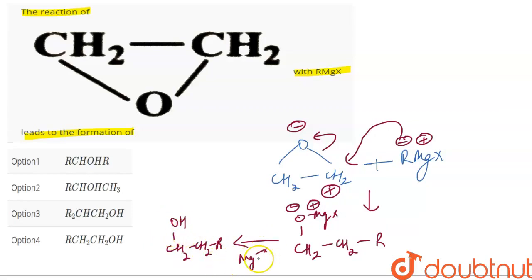And what is it? MgX, OH. So what is the answer? R, CH2, CH2OH. That is option 4. Correct. Thank you.